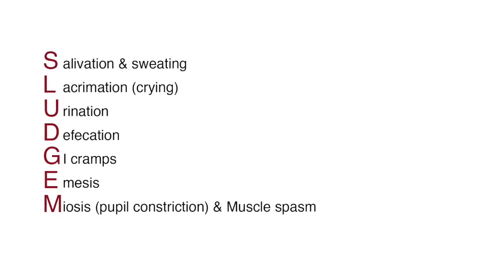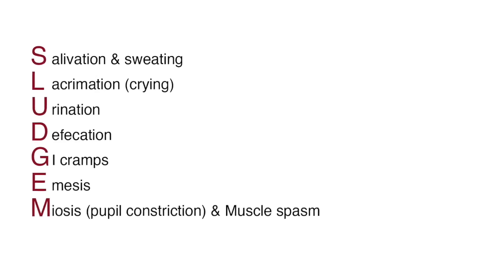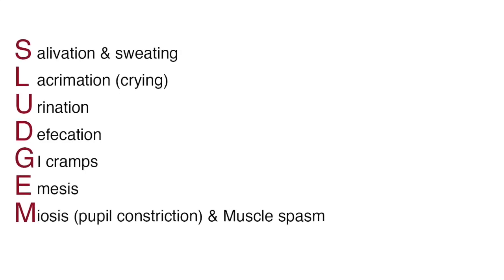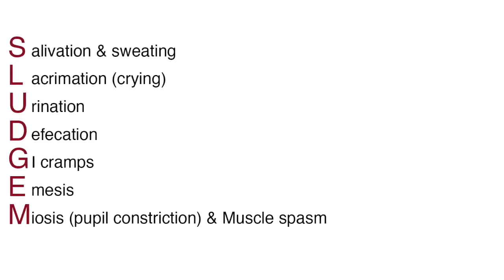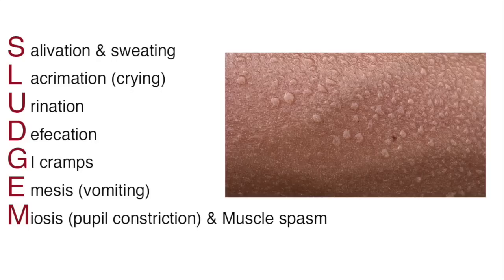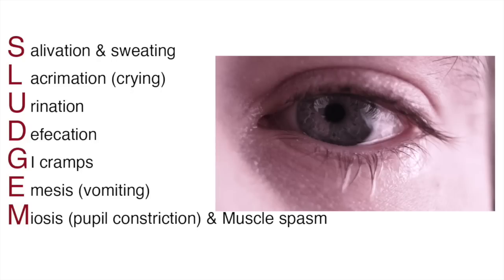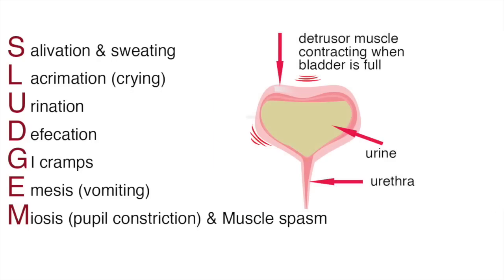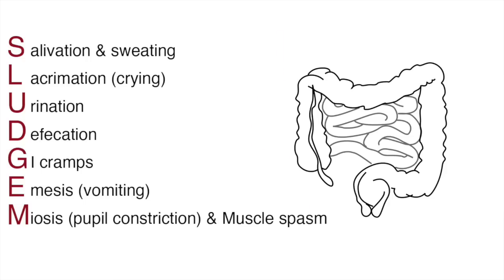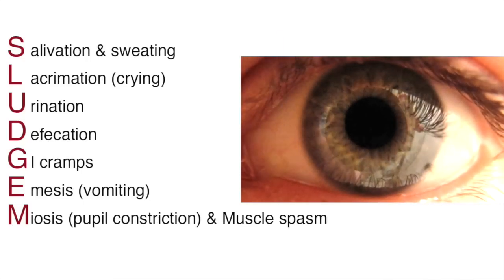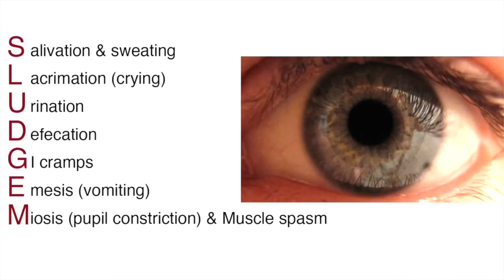Too much cholinergic medication can lead to overstimulation of the parasympathetic nervous system and cause unwanted side effects. The acronym SLUGE-M will help us remember the adverse effects of cholinergic drugs: salivation and sweating, lacrimation or crying, urination, defecation, GI cramps, emesis, and miosis which is pupil constriction.